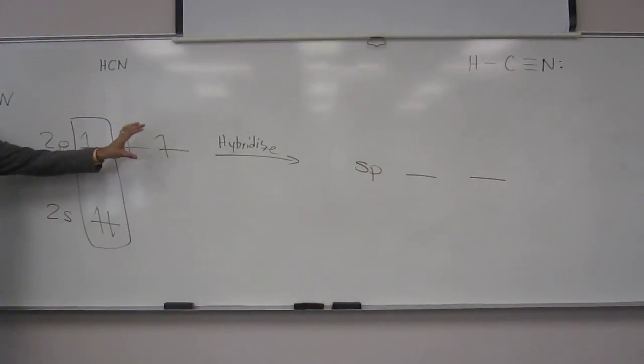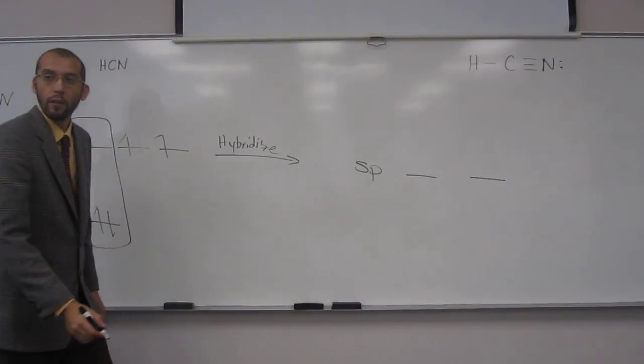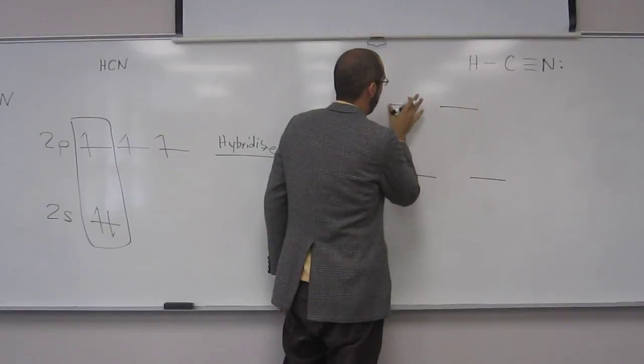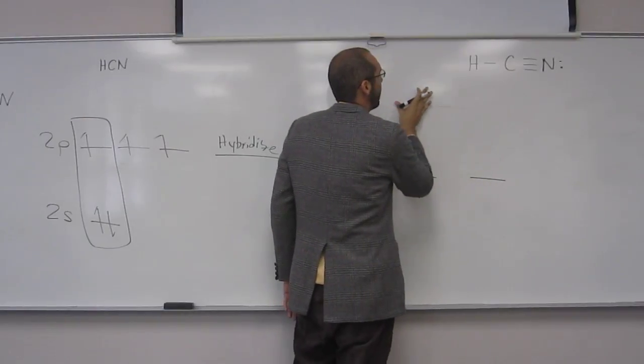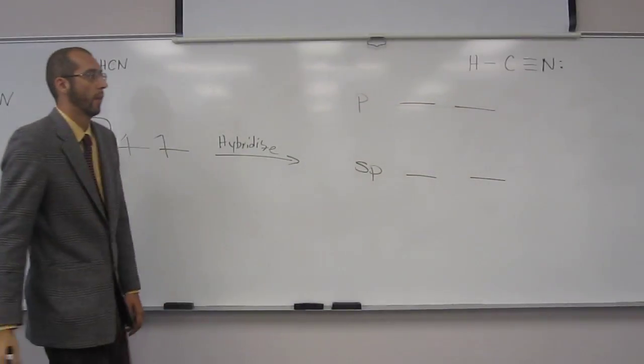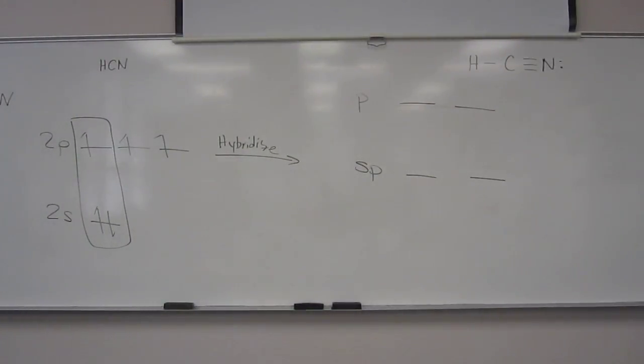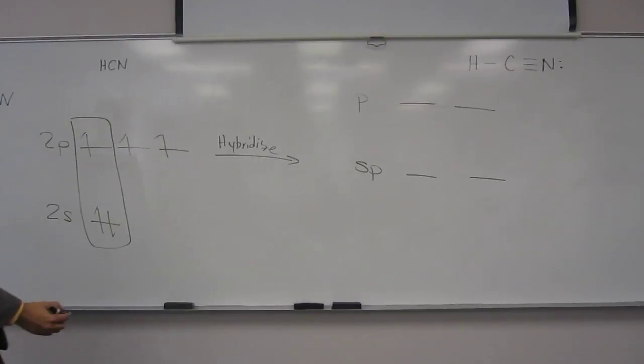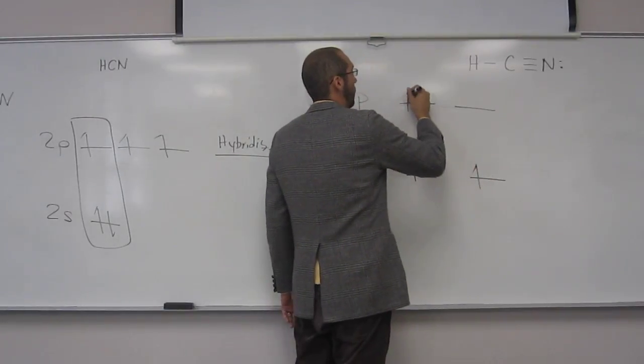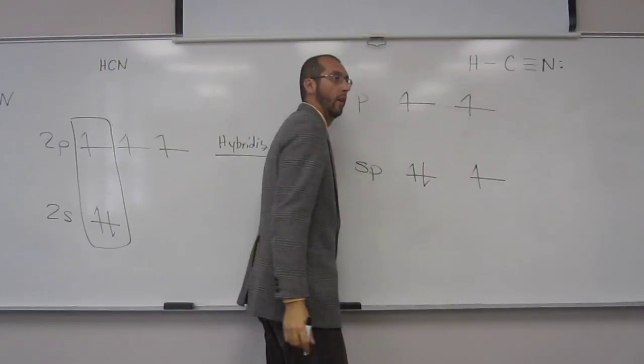And what happened to our other two p's over here? Nothing happened to them, right? Did they get stuck in the blender? Nothing happened to them. Okay, so we're just going to put the p up here. And if you want to write 2p, that's fine too. So now what are we going to do? Let's draw our electrons in. So one, two, three, four, five. Okay.